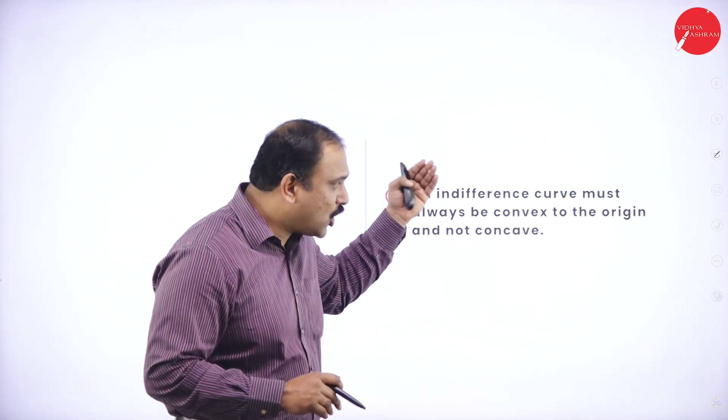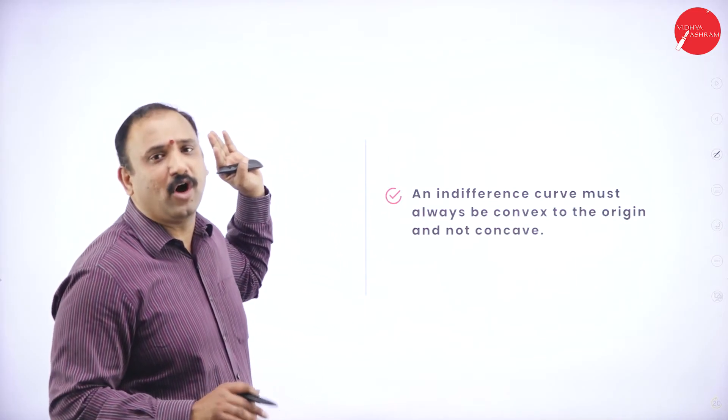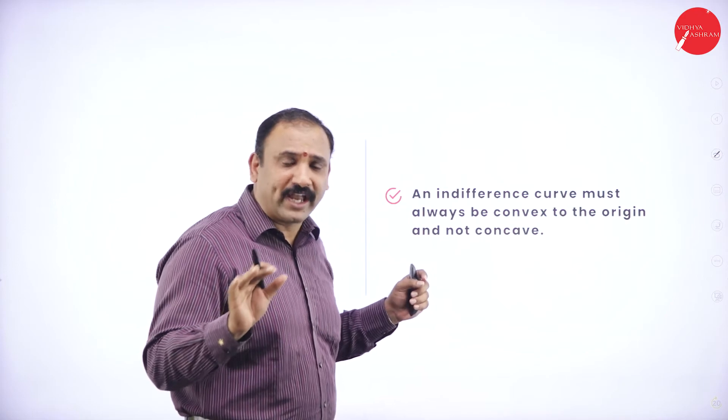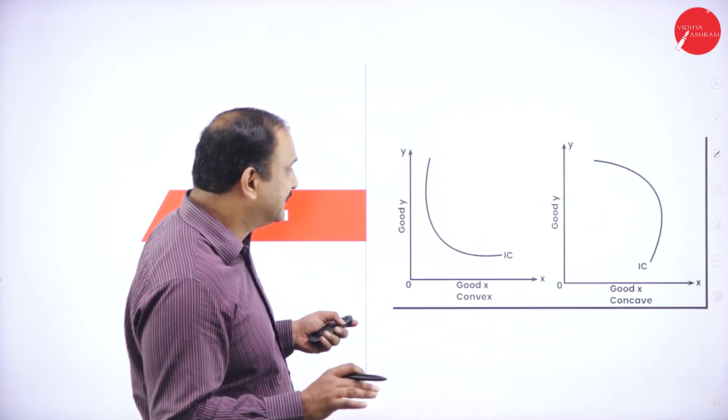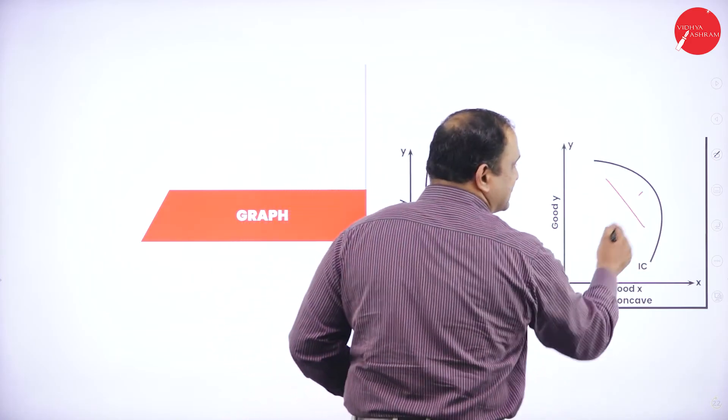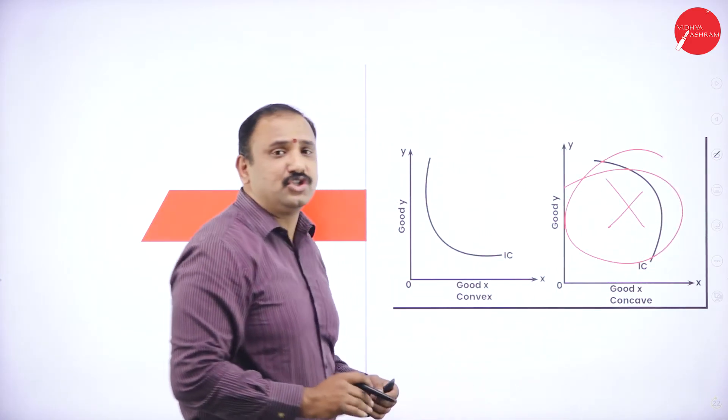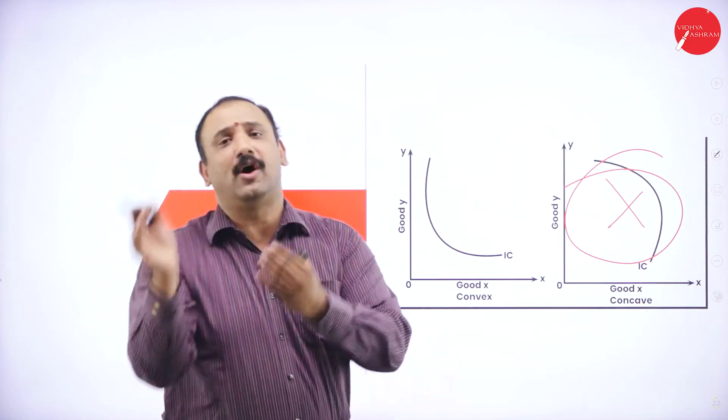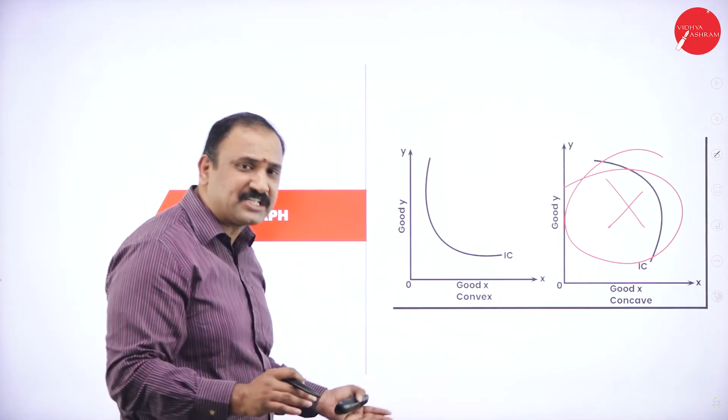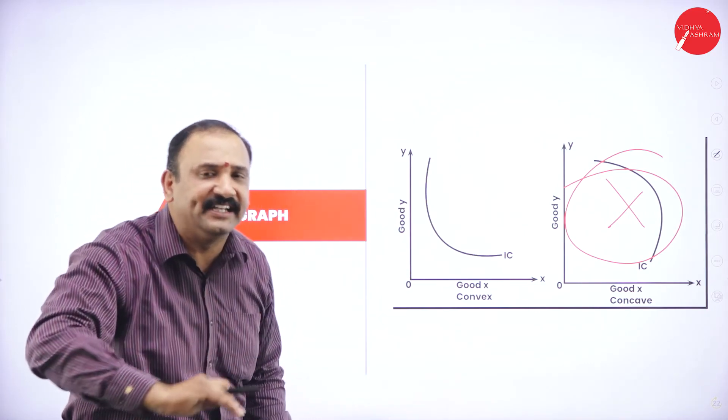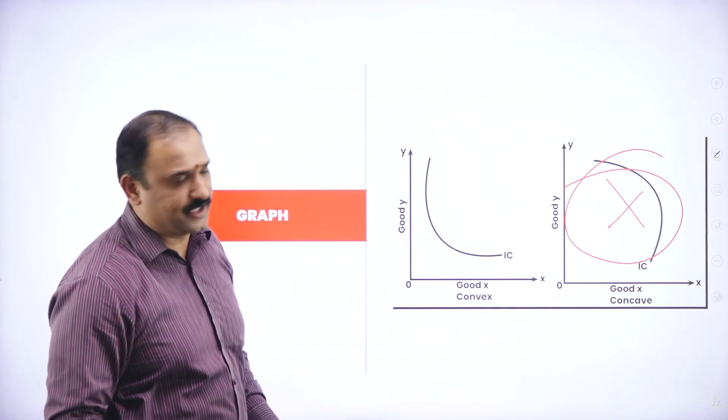An indifference curve must always be convex to the origin and not concave. You cannot see a graph like this. You will always see a convex. This is not possible at all. The indifference curve will never be concave. It is always convex because it's always close to the margin. It starts from a peak and then it starts going downwards.